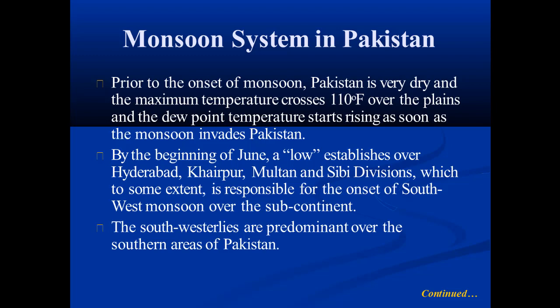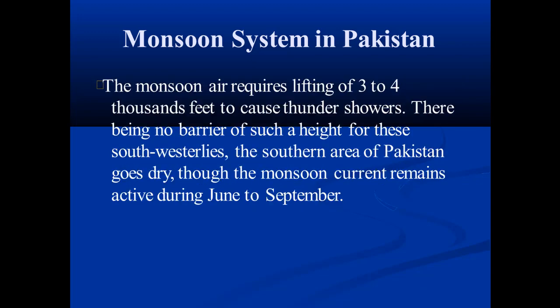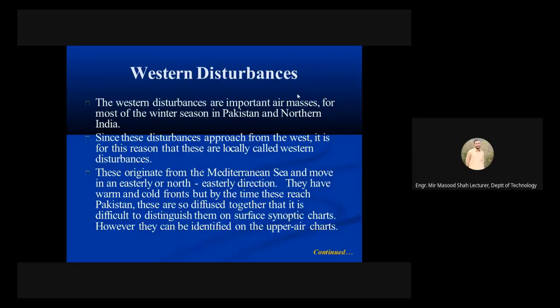The south-westerlies are predominant over the southern areas of Pakistan, and the monsoon requires lifting of 3,000 to 4,000 feet to produce thundershowers. There being no barrier of such height for the south-westerlies, the southern areas of Pakistan remain dry, though the monsoon current stays active during June and September.